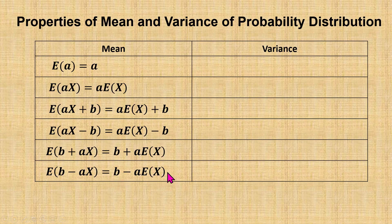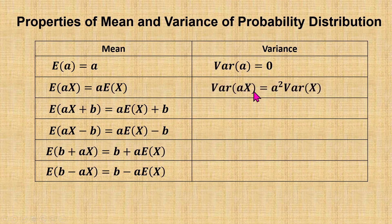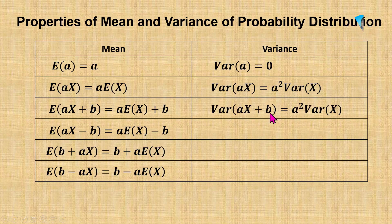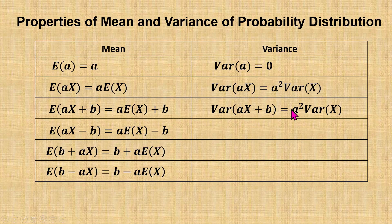For variance, the variance of a constant a is equal to 0. The variance of aX — taking out the constant a — becomes a squared, so variance of aX equals a squared times variance of X. For variance of aX plus b, we can separate it into variance of aX plus variance of b. Variance of aX equals a squared times variance of X, and variance of a constant b is 0. Therefore, variance of aX plus b equals a squared times variance of X.